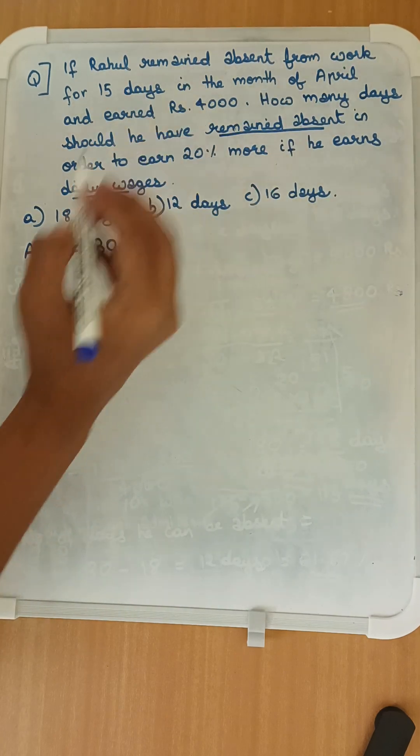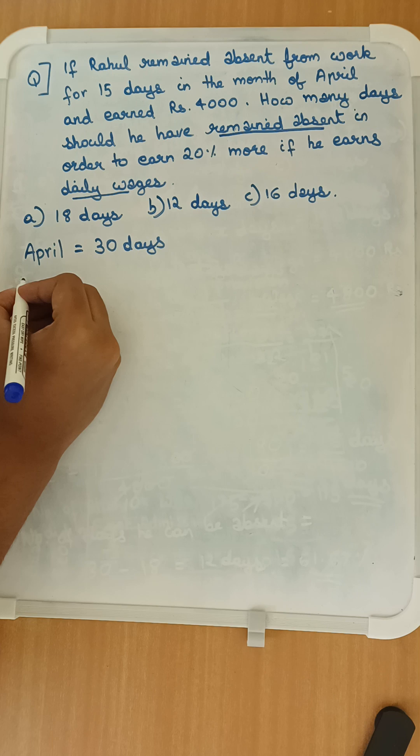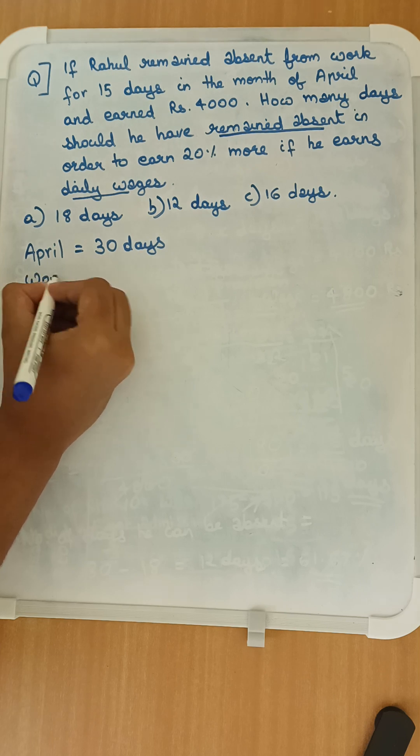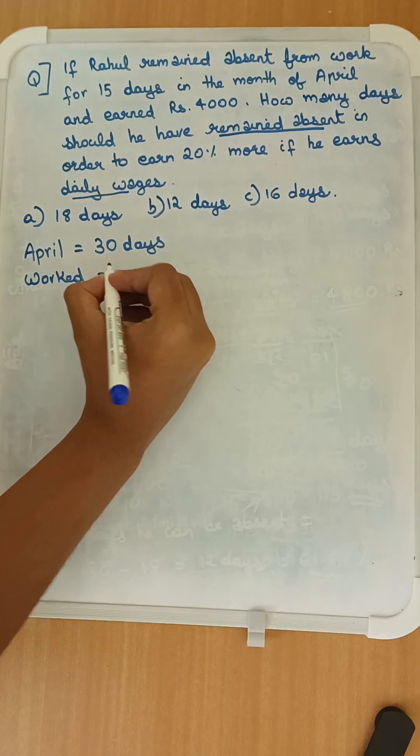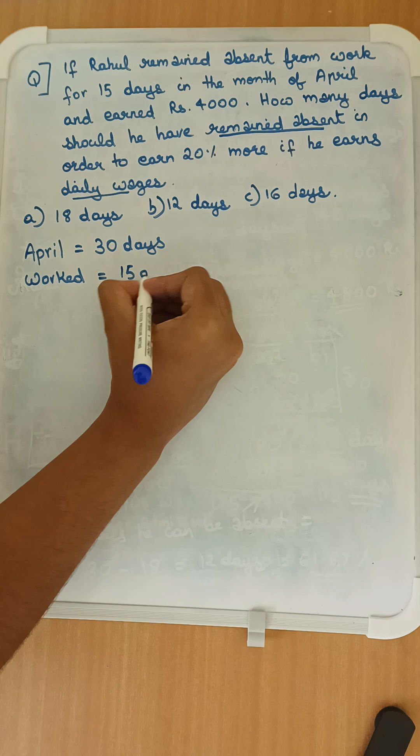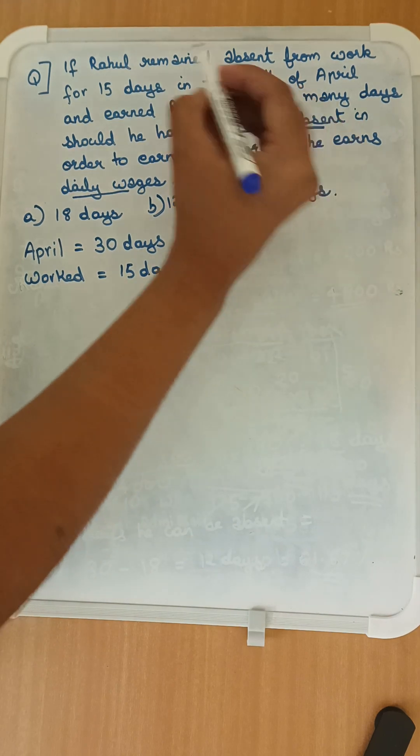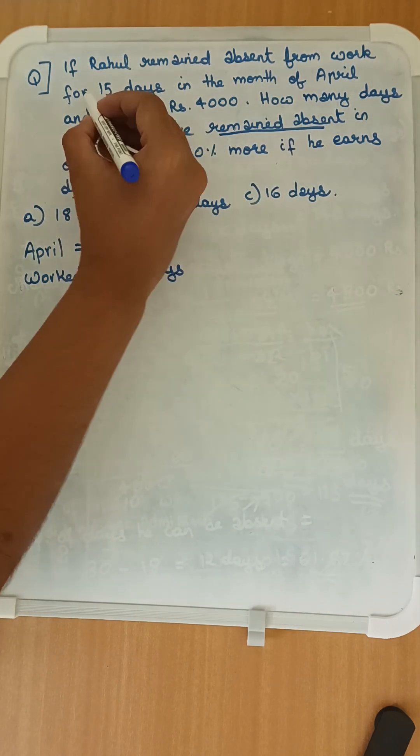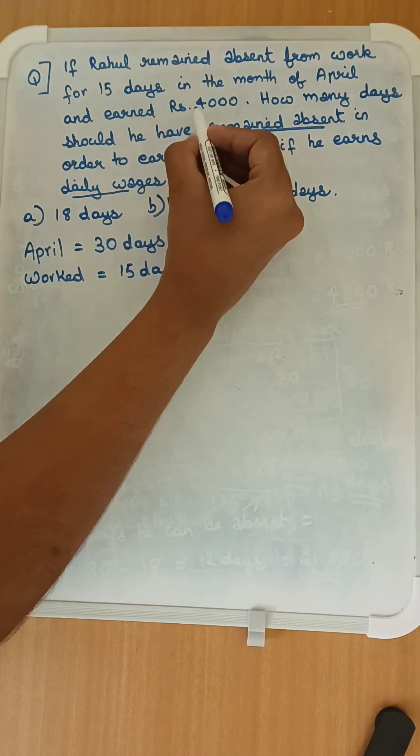Now they have told Rahul remained absent from work for 15 days, so the number of days that Rahul worked is equal to 30 minus 15, that is 15 days. They have told us that he worked for 15 days and earned Rs 4,000.